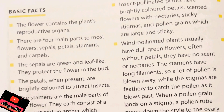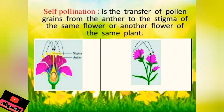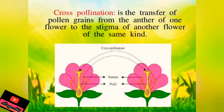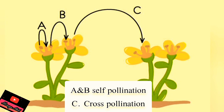During self-pollination, pollen is transferred from the stamen to the stigma of the same plant. During cross-pollination, pollen is transferred from the stamen of one flower to the stigma of a flower on another plant. Insect-pollinated plants have brightly colored petals, scented flowers with nectaries, sticky stigmas, and large sticky pollen grains. Wind-pollinated plants usually have dull green flowers, often without petals, no nectaries, and long feathery stigmas. In this diagram, arrows A and B show self-pollination, and arrow C shows cross-pollination.